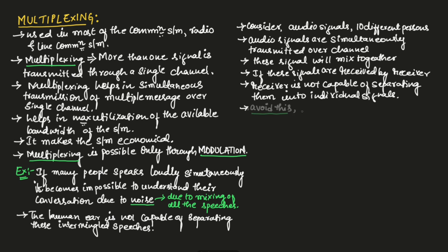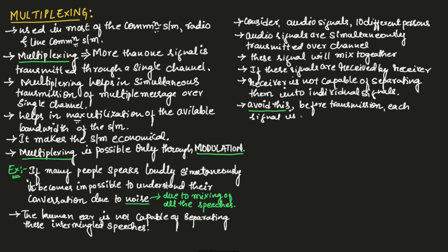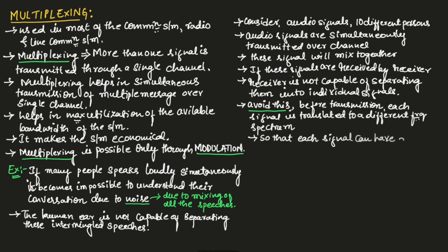To avoid this, before transmission over a channel, each signal is translated to a different frequency spectrum so that each signal can have a different transmission frequency. This is done through modulation.